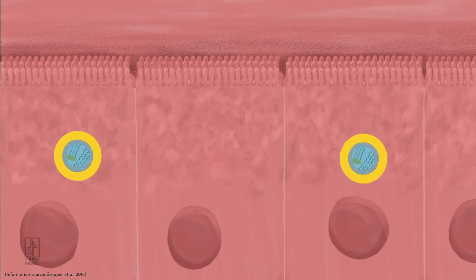The chylomicron will also carry phospholipids, cholesterol, and fat-soluble vitamins along with the fats.